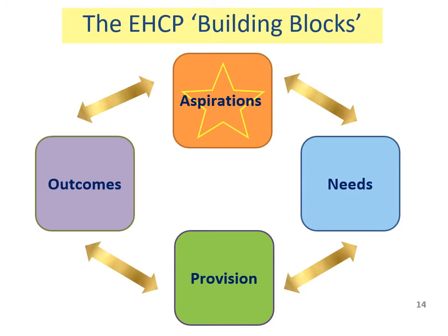An EHC plan is made up of 12 sections — information on our Sendia website and our EHCP leaflet look at these in more detail. But it's important to understand that all sections are based on the following building blocks: your child or young person's aspirations and hopes for the future; needs, meaning the difficulties your child is experiencing; provision, meaning the support your child will need to address their difficulties; and outcomes, which are what everyone wants your child or young person to be able to do in an agreed period of time with the support in the EHC plan.